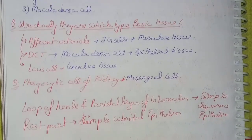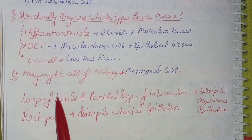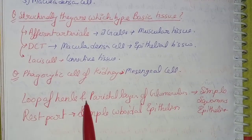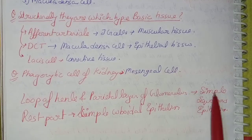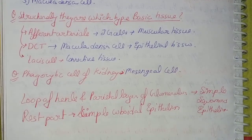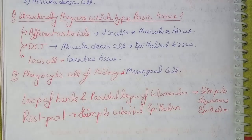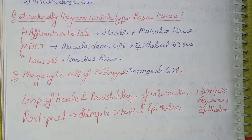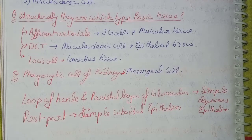Coming to the cells of the kidney: in the nephron, the loop of Henle and the parietal layer of the glomerulus are lined by simple squamous epithelium, and the rest of the nephron is lined by simple cuboidal epithelium. This completes our topic on kidney gross anatomy. I hope you like this video. If you like this video, don't forget to subscribe to my YouTube channel, MBBS Studies with Rishab Singh. Thank you.